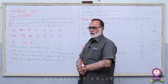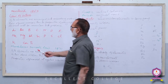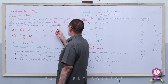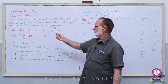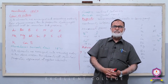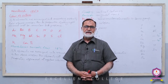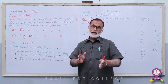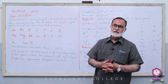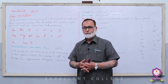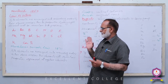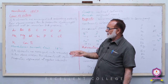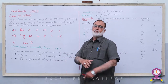Newlands' Law of Octaves کیا ہے؟ If the elements are arranged in the ascending order of their atomic masses, then the properties of every eighth element will be similar to the first one۔ اس طرح elements کو ترتیب دیتے جائیں تو horizontal lines بنتی ہیں جنہیں Periods کہیں گے، اور vertical columns بنتے ہیں جنہیں Groups کہیں گے۔